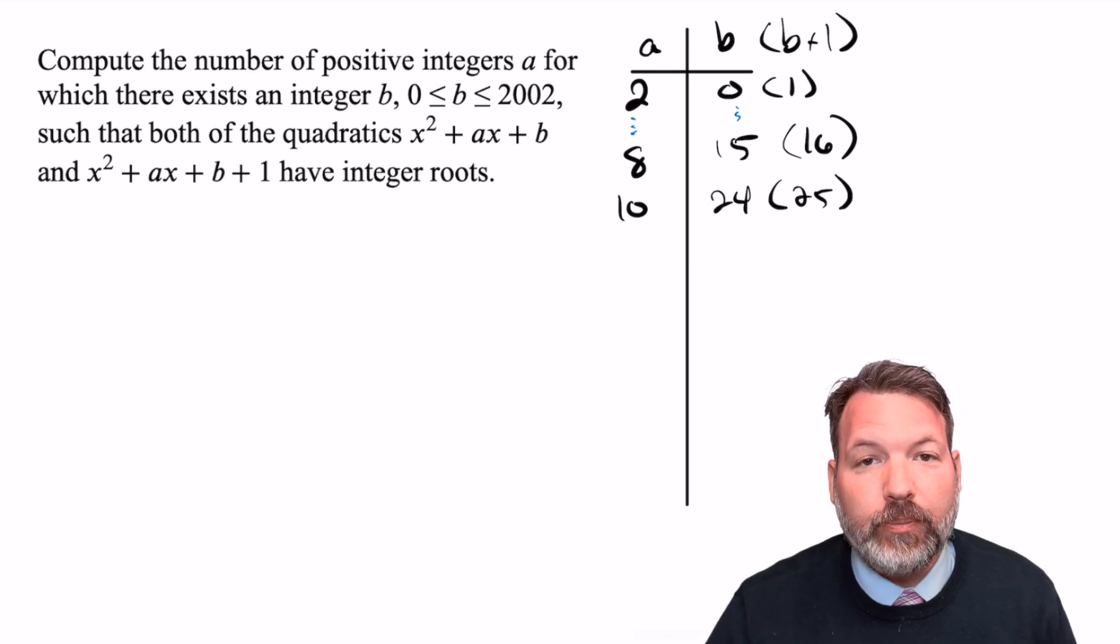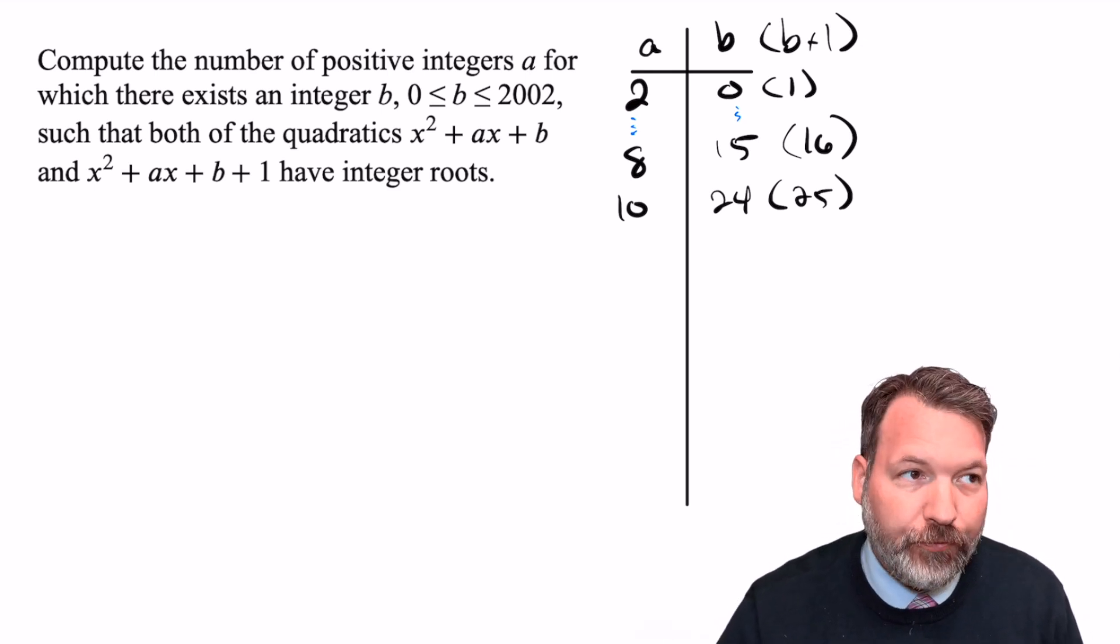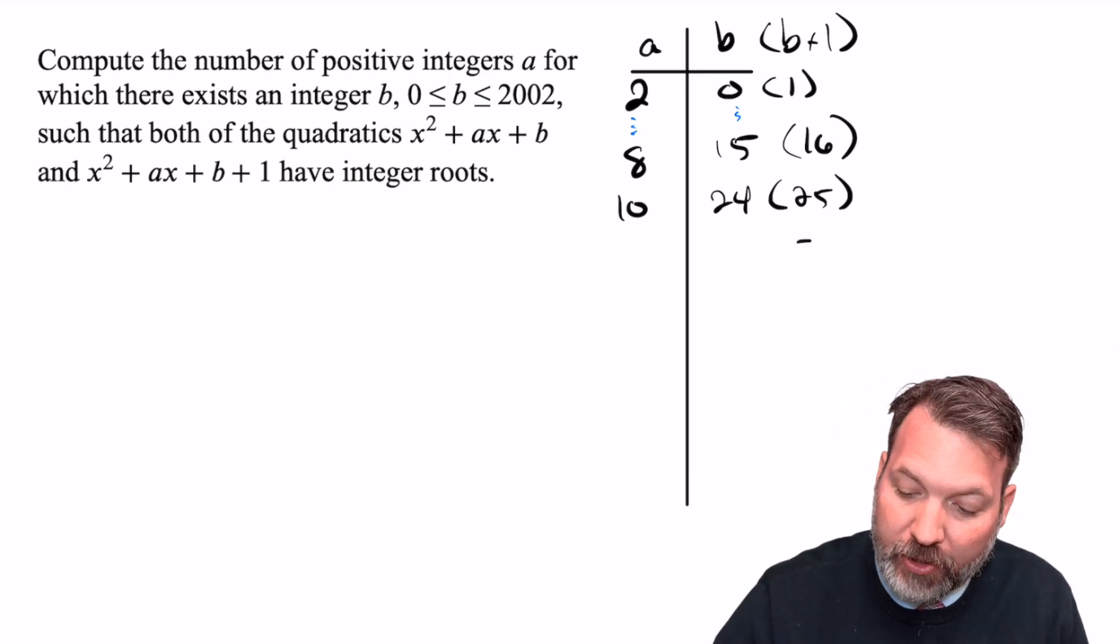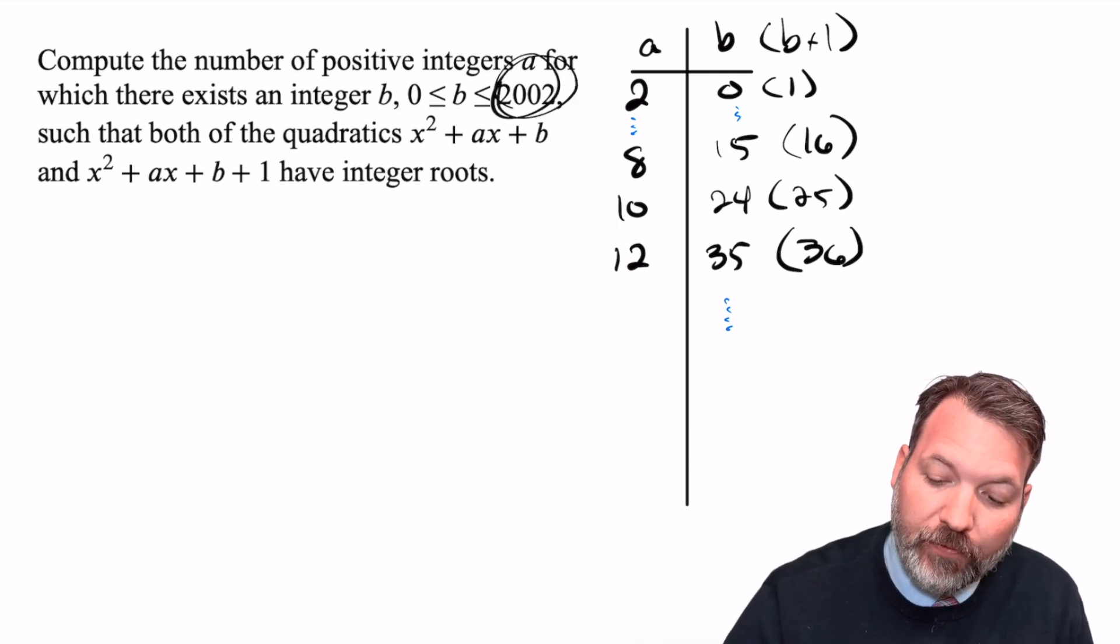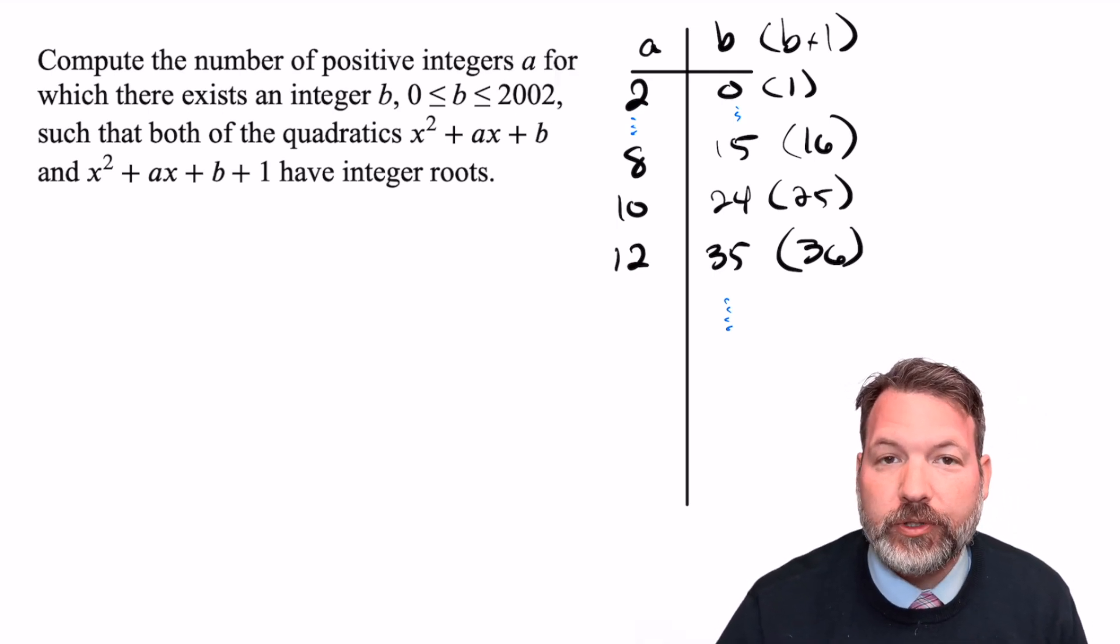I'm not going to list everything in between. But of course, it's going to also be the perfect squares four and nine leading into 16 and 25 and 36, and so on going all the way up to the last perfect square that is still less than or equal to 2002.